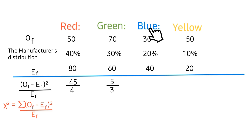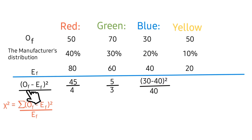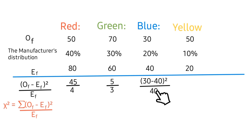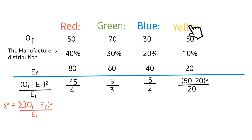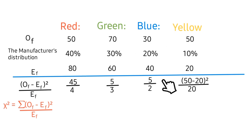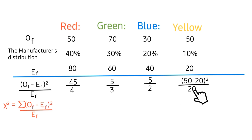For blue: the observed frequency is 30, the expected frequency is 40, so (30 − 40) squared divided by 40, which gives 100/40 or 5/2. For yellow: the observed frequency is 50, the expected frequency is 20, so (50 − 20) squared divided by 20, which gives 900/20 or 45.